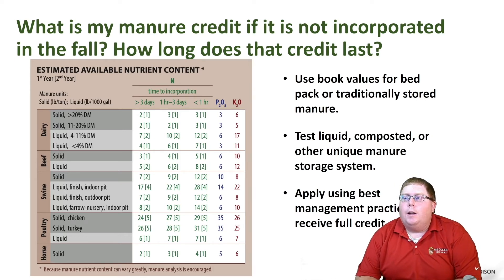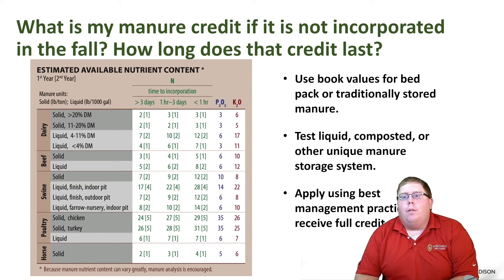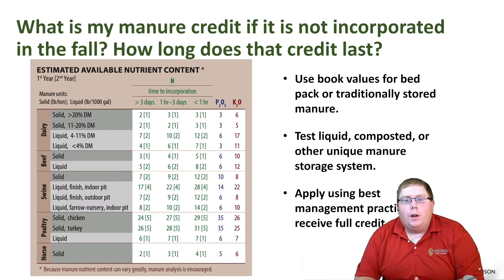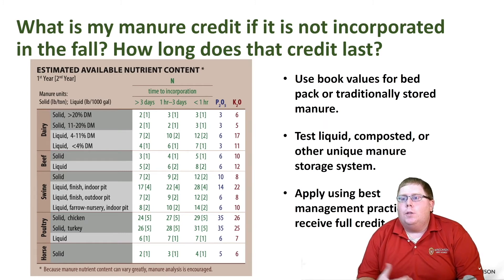We want to apply using best management practices to receive the full credit — waiting until soil temperatures drop below 50 degrees in the fall to receive the full nitrogen credit the next spring, incorporating where appropriate and recommended, and not incorporating where soil conditions aren't suitable. We can use that approach to manage our manure as a system.